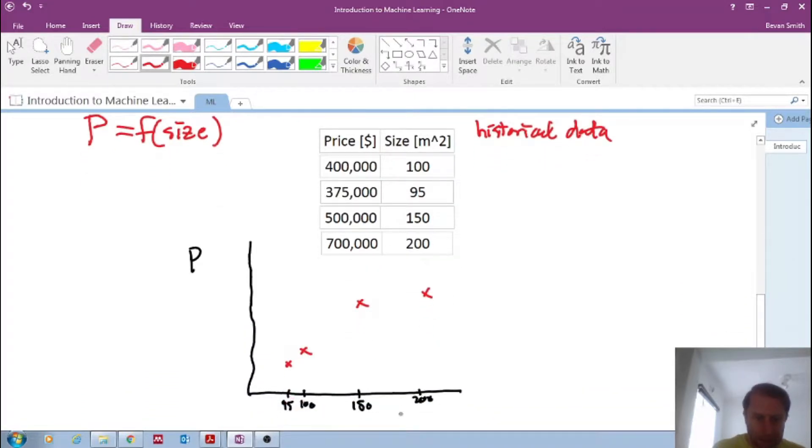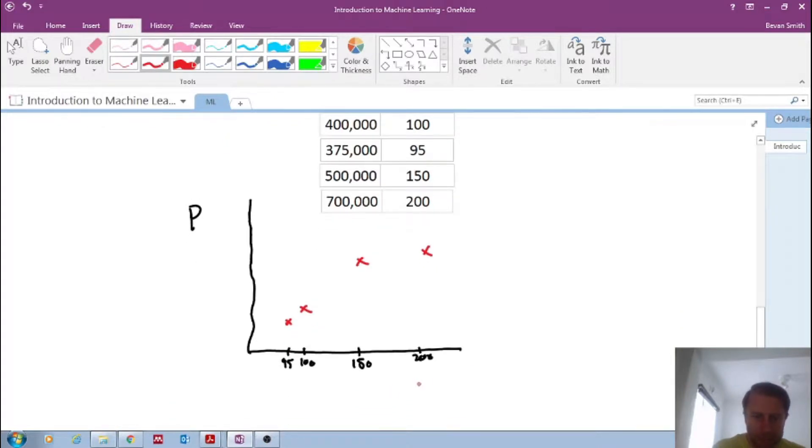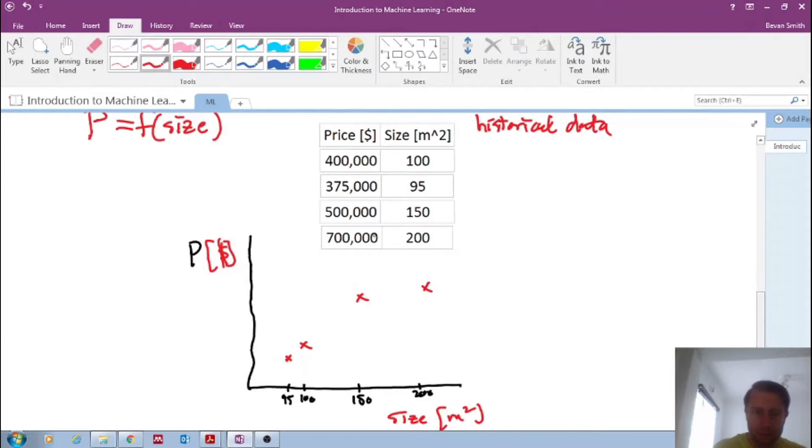And so you go and plot it. So there's 95. So this will be on the x-axis, we will have size, in square meters and price in dollars. So here we do have it. So 95 is 375 over here. Let's call it like 375,000.